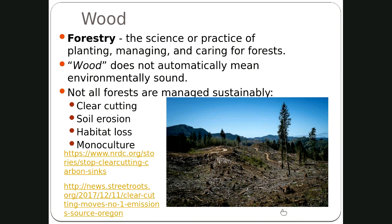Dutch elm disease is a good example of monoculture risk. In the 1940s and 50s, cities across the U.S. planted elm trees — they were beautiful, shaded well, and grew nicely in urban areas. Then Dutch elm disease hit and because every tree in many communities was an elm, they lost all their trees. Now cities mandate a variety of tree species on the same block so one disease can't wipe out an entire block.